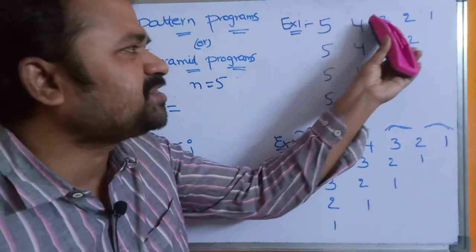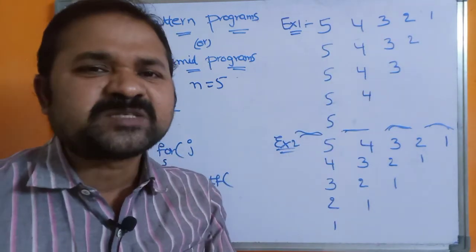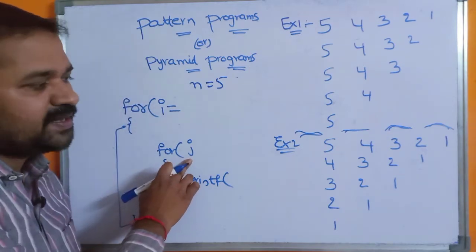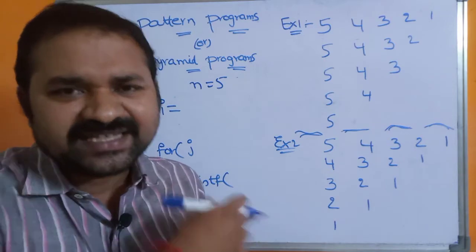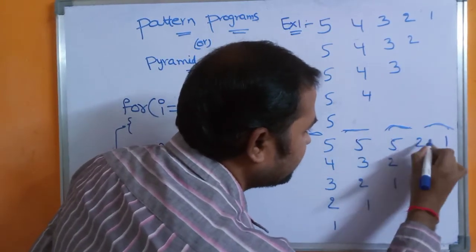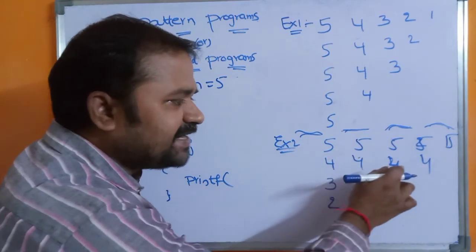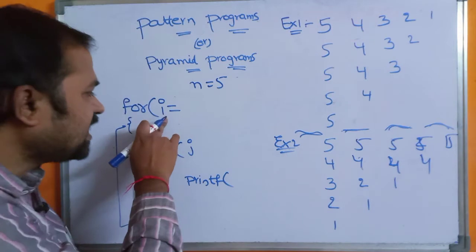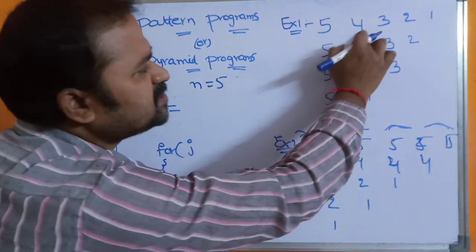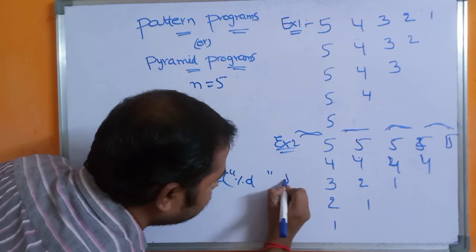The first row contains 5 4 3 2 1 — all different values. The second row contains 5 4 3 2 — also different values. If we want to display different values in each row, we display the innermost loop value j. If we want to display the same values in a row (like 5 5 5 in row one and 4 4 4 in row two), we use the outermost loop value i. Since our target is different values in each row, we must display j value.